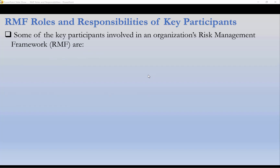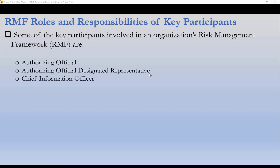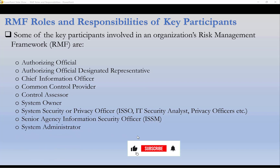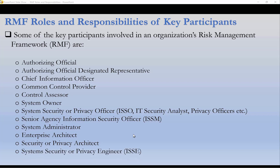Some of the key participants involved in an organization's Risk Management Framework (RMF) are: the Authorizing Official, the Authorizing Official Designated Representative, the Chief Information Officer, the Common Control Provider, the Control Assessor, the System Owner, the System Security or Privacy Officer, the Senior Agency Information Security Officer (typically called the ISM), System Administrators, the Enterprise Architect, and the Security or Privacy Architect, as well as System Security or Privacy Engineers.